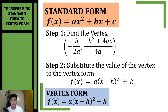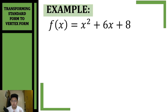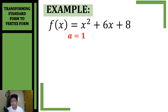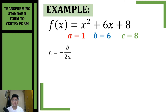Here are some examples on how to convert standard form to vertex form. For our first example, we're going to rewrite the standard form to vertex form. First, we need to get the vertex by finding the values of a, b, and c. So our a is 1, b is 6, and c is 8. Now let's use the formula to get the x-coordinate of our vertex: negative b over 2a.